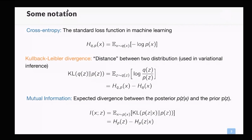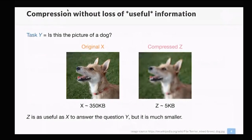To start thinking about representations from an information-theoretic point of view, consider a binary task: 'Is there a dog in this picture?' I can easily answer using the original picture, but a much smaller compressed version also works fine — even though it's about 70 times smaller. This raises the question: how much information can I throw away from the original data while still being able to answer the task? In other words, how much can I compress the input while maintaining my ability to solve the task? This question is answered by the classical information bottleneck principle.